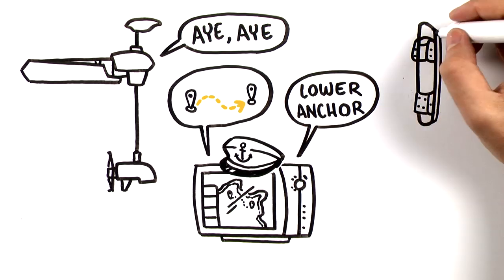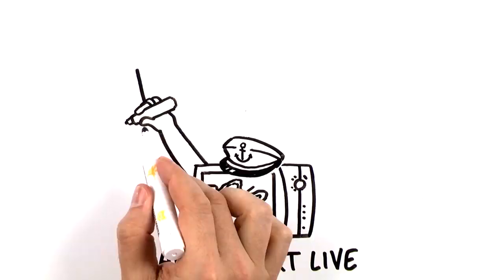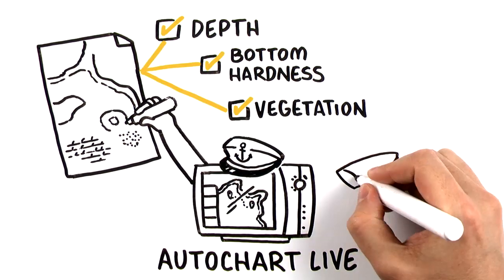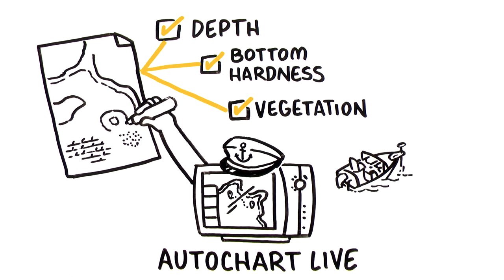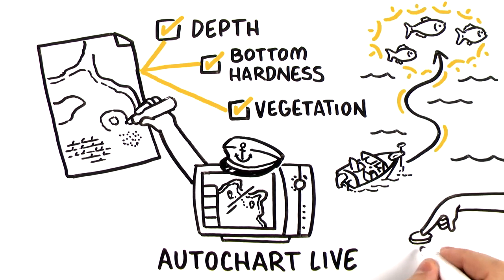It'll even tell your Minn Kota Talon when to anchor. Humminbird's AutoChart Live allows you to make your own map of depth, bottom hardness, or vegetation, and our network makes it simple to use your trolling motor to automatically fish an edge or contour with a couple simple button presses.